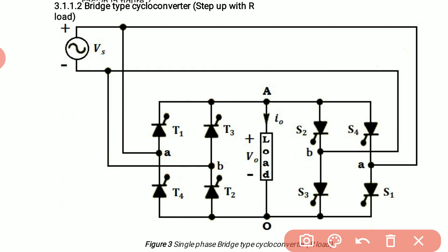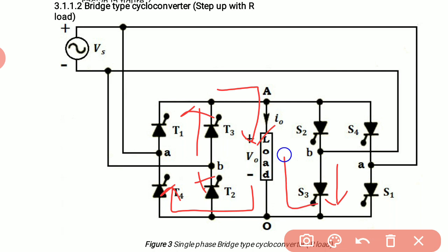During this phase, as terminal B is positive, current starts flowing through thyristor T3, through the load, and through thyristor T4, back to terminal A. In the other section of the circuit, thyristor S3 allows current through the load in the opposite direction, which goes back through S4 to terminal B, which is at negative potential.